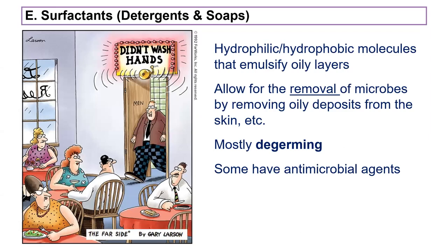Now let's talk about hand washing. Washing your hands is a great idea in many contexts. What you're mostly doing is using a surfactant — detergents and soaps. A soap generally tends to not always have a charge, while a detergent has a charge. In chemistry, these have slightly different meanings, but in practice we often say detergent.